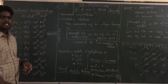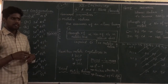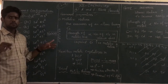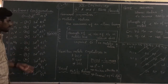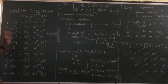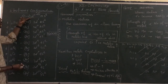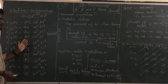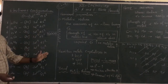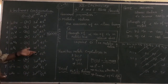So the general electronic configuration for d-block elements is (n-1)d¹⁻¹⁰ ns². This applies to the 4d series, 5d series, and 6d series. For example, in the 4d series the first element has configuration [Kr] 4d¹ 4s², and the general configuration for 5d elements would be 5d, 6s².